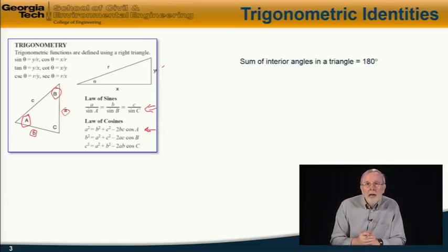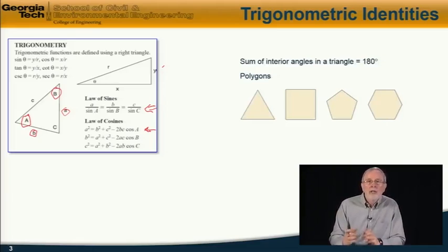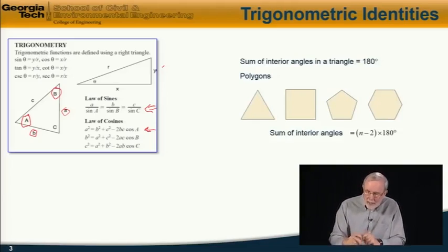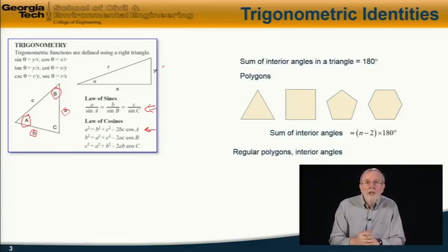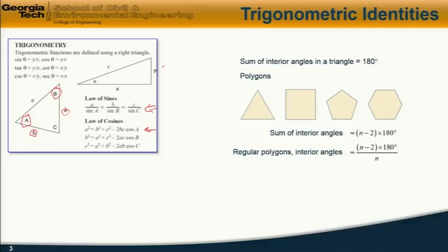The sum of the interior angles in a triangle equals 180 degrees. More generally, for polygons of arbitrary number of sides, the sum of the interior angles equals the number of sides minus 2 multiplied by 180 degrees. For regular polygons where all angles and sides are equal, the magnitude of the interior angles is (n minus 2) times 180 divided by the number of sides n.